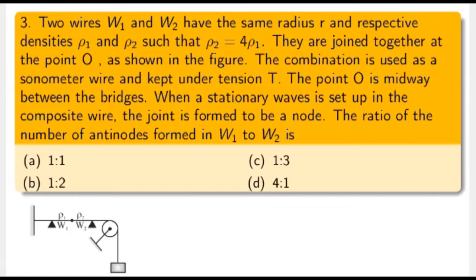Next question: two wires W1 and W2 have the same radius r and respective densities ρ1 and ρ2 such that ρ2 = 4ρ1. They are joined at point O, which is midway between the bridges. When a stationary wave is set up in the composite wire, the joint is found to be a node. What is the ratio of the number of antinodes formed in W1 to W2? Since it is a sonometer wire, both wires must have the same frequency, so f1 = f2.